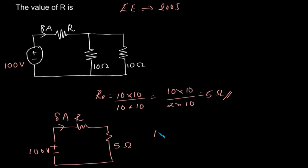That is, 100 volts equals 8 into R plus 8 into 5. That's 8 times 5 equals 40. So 100 minus 40, that is 60 equals 8R.